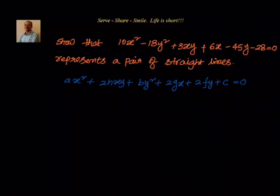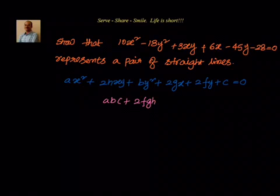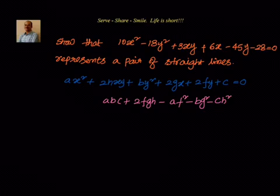What is the condition that needs to be satisfied by this general equation to represent a pair of straight lines? That condition is ABC plus 2fgh minus Af² minus Bg² minus Ch² equal to 0. We are not looking into the derivation of this now — in the next session we will do that derivation. If this condition is satisfied, then the general equation represents a pair of straight lines.